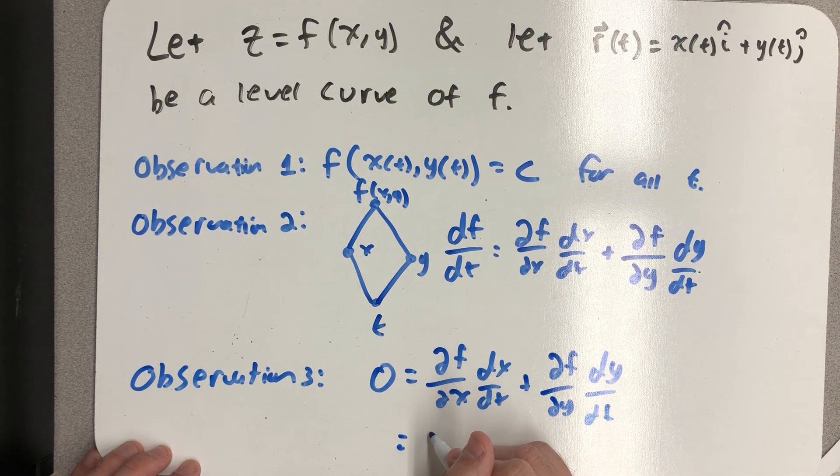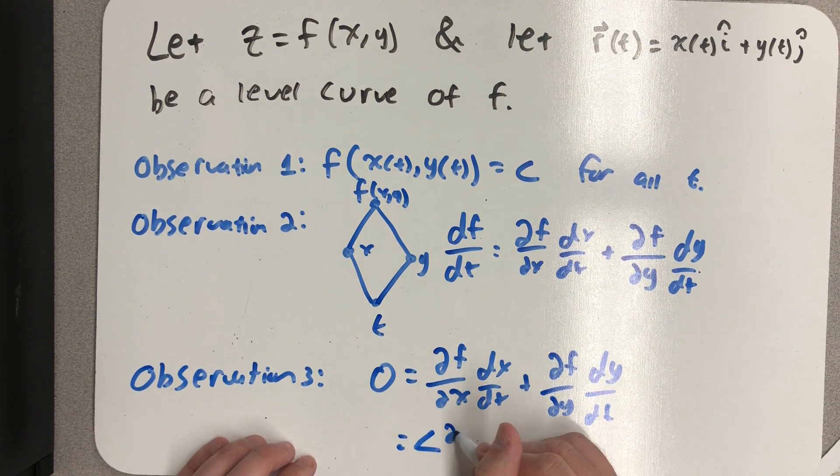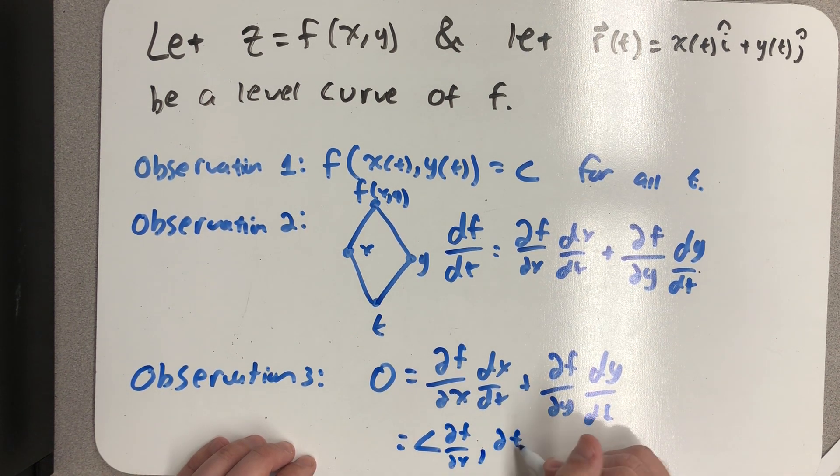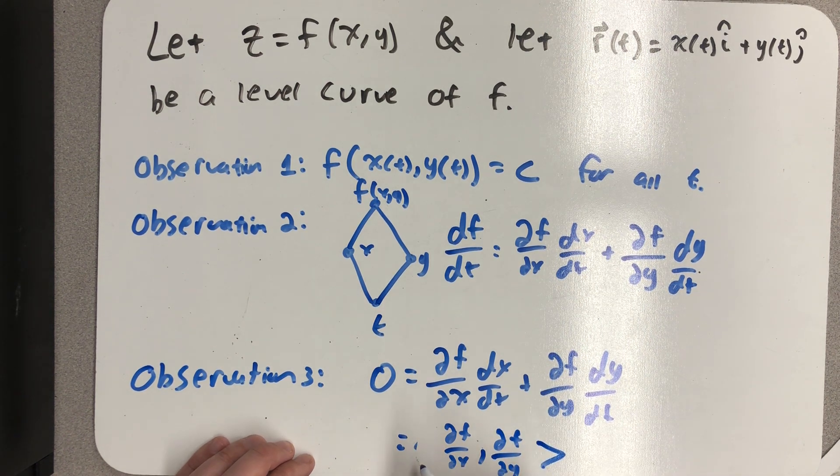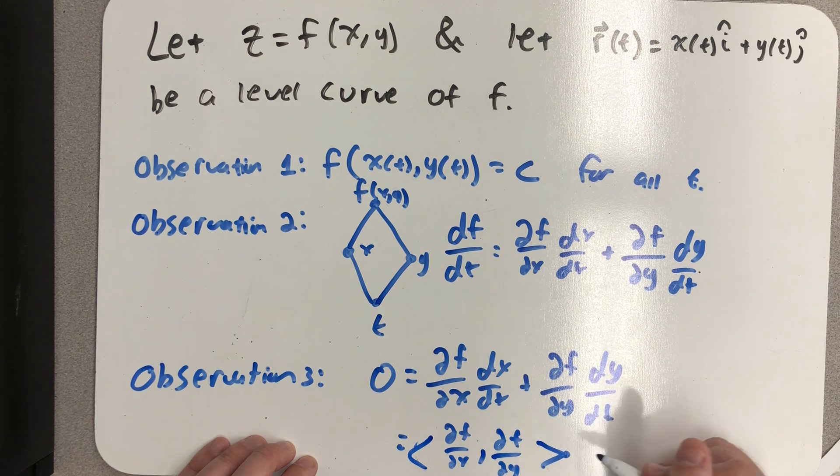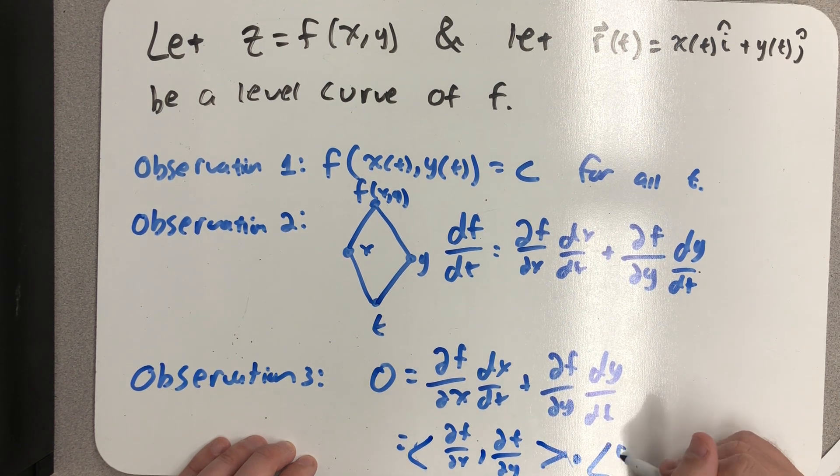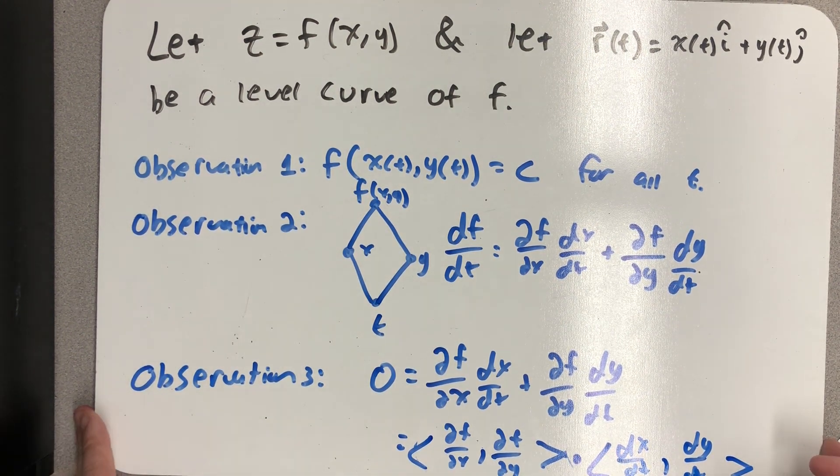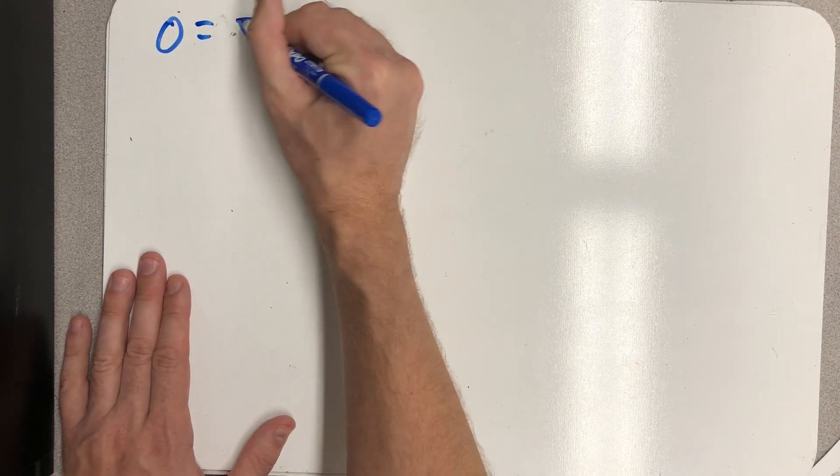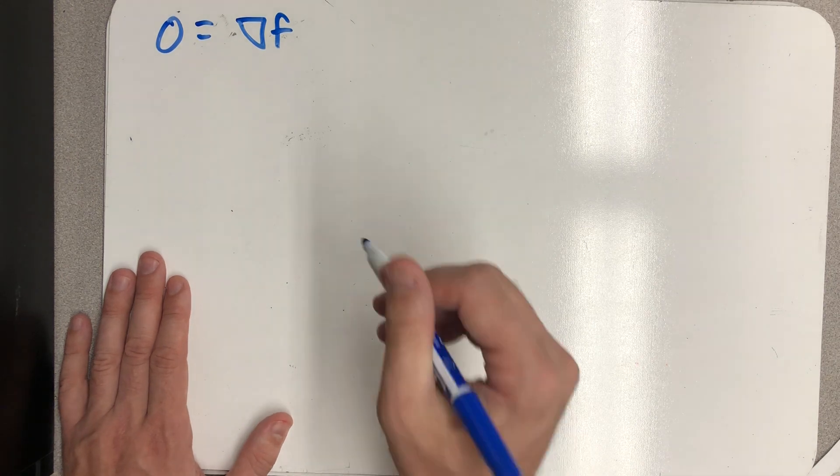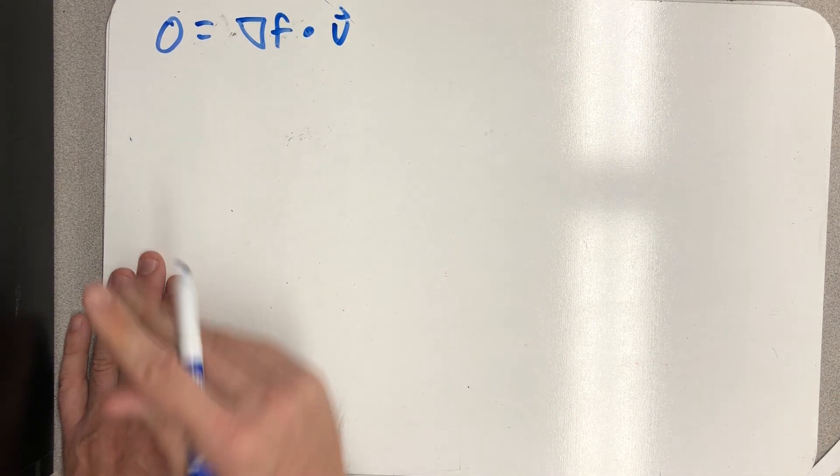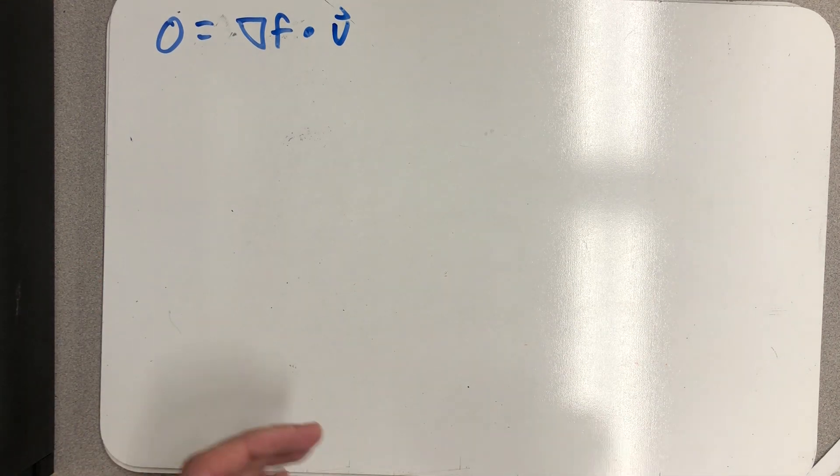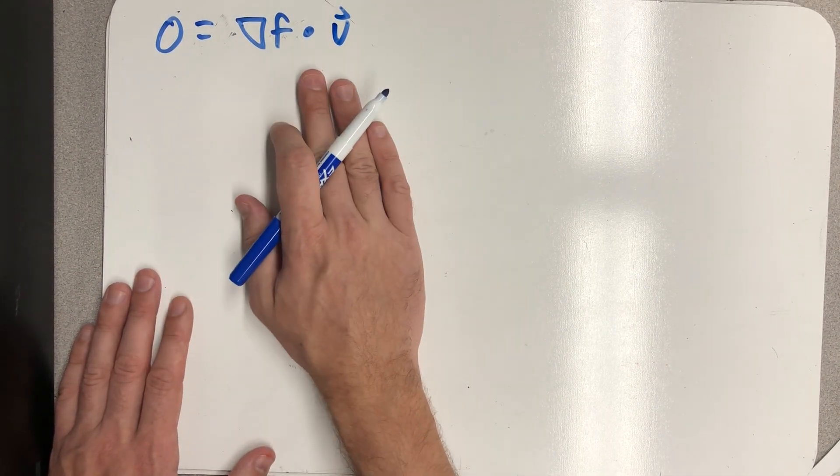Now I can write this as the partial of f with respect to x comma the partial of f with respect to y - the gradient vector - dotted with dx dt, dy dt. So finally, we have the statement I was looking for: the dot product of the gradient vector with the velocity vector equals zero. This means these two vectors are orthogonal.